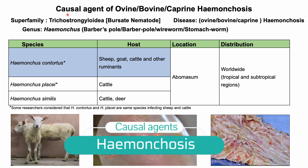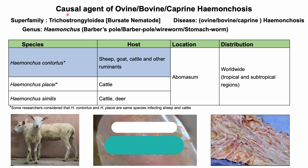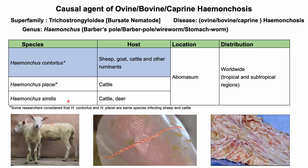Causal agents of ovine, bovine, or caprine hemonchosis. Under the Trichostrongyloidea superfamily, Hemonchus is one of the important genera. The most important species under this genera is Hemonchus contortus, which infects sheep, goats, cattle, and other ruminants. Hemonchus placei and Hemonchus similis are important for cattle.